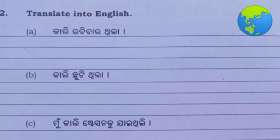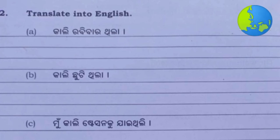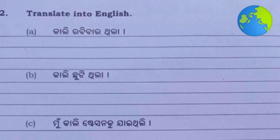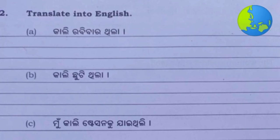Number C: 'Mokali station ko jai thila' - translation: 'I went to the station yesterday.'